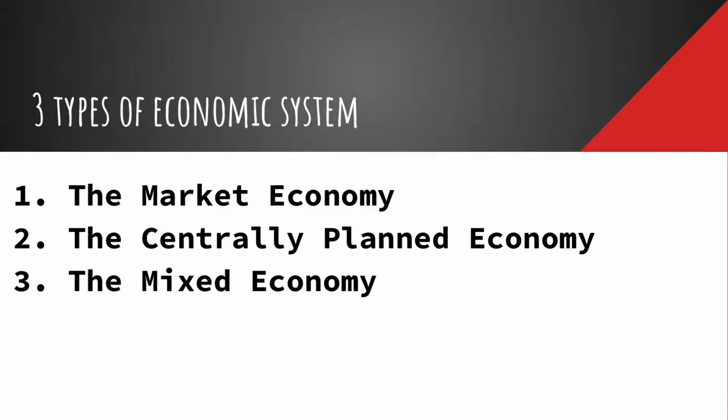The second type of economic system is the centrally planned economy. These economies are operating on Marxian ideologies and principles. In a communist system, the state owns all means of production and distribution. The central planning authority under the government determines what will be produced and in what quantity, by whom and for whom it will be produced, and at what price. State intervention is the basic feature of these economies. However, in practice, there is no pure centrally planned economy. The economic system which most closely resembles a pure centrally planned economy is that of the USSR.